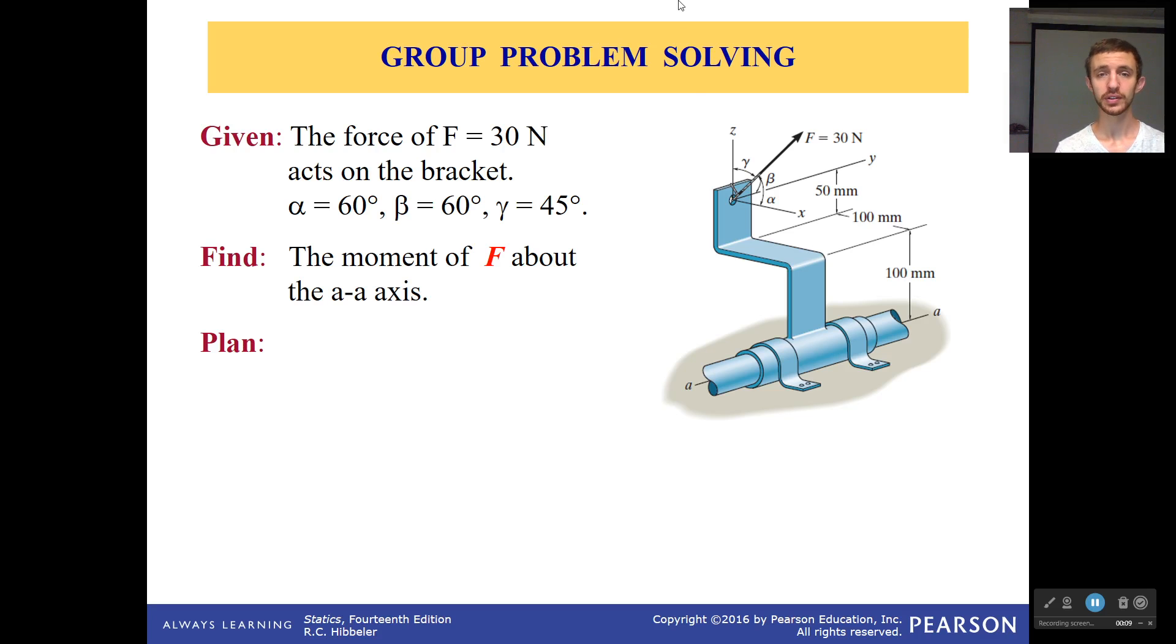In this case we have a force of 30 newtons. Let me put my little pin on. There we go, 30 newtons. It acts on this bracket, which is a very strangely shaped bracket, but don't let it freak you out, because we just need the position vector, not that crazily shaped bracket. It gives us three angles, gamma, beta, and alpha, which is all pretty wonderful, because that means we can use our direction cosines, which helps out a lot to solve this problem.